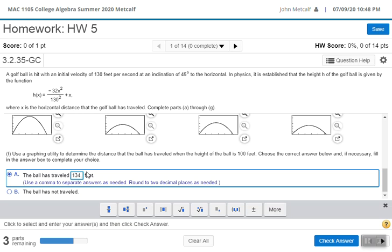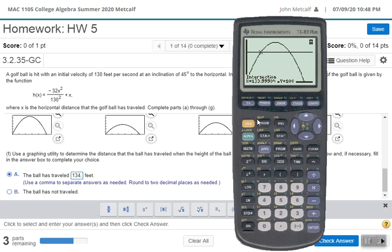We'll go back this time, and we'll hit second, calculate the intersection number five. Let's go to the other side. Let's see if we get here. We'll go enter, enter, enter.